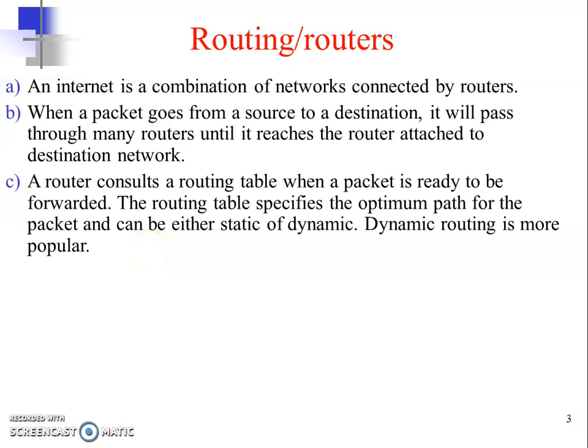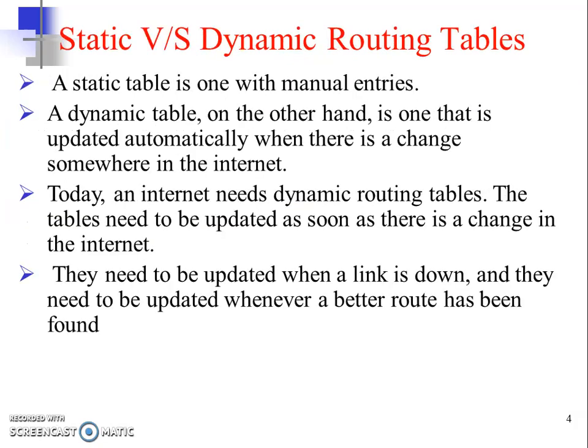Routing tables can be either static or dynamic. Static routing tables are the ones with manual entries. Dynamic routing tables, as the name suggests, are updated automatically based on real-time changes happening on the network. These real-time changes could be that a link is down or a shorter path is available for the packet to reach its destination.